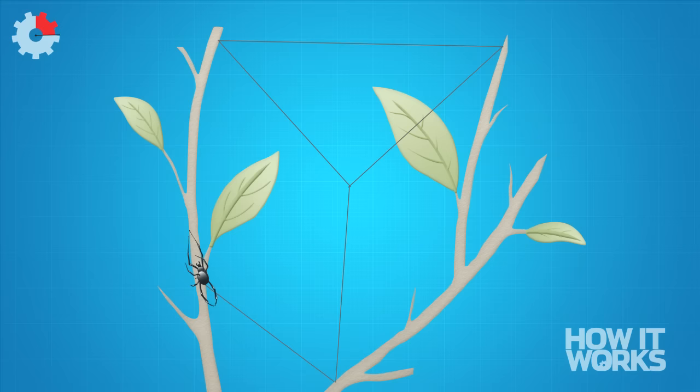The weight of the spider bows the thread into a V shape. It then adds radial threads from the centre to surrounding vegetation.